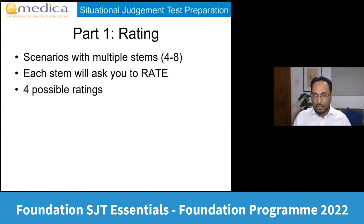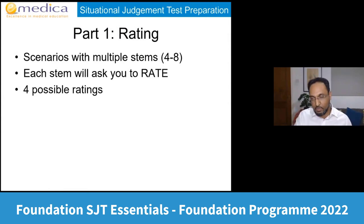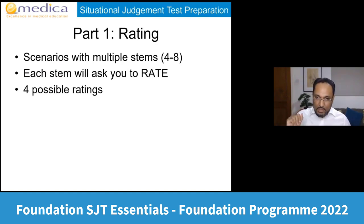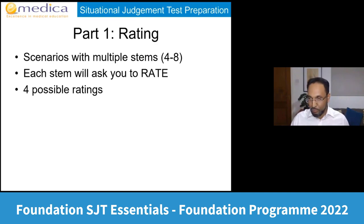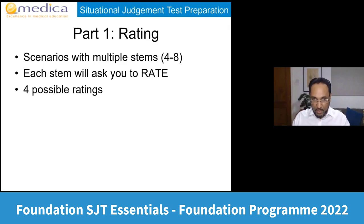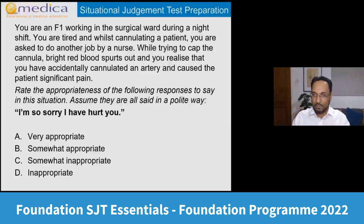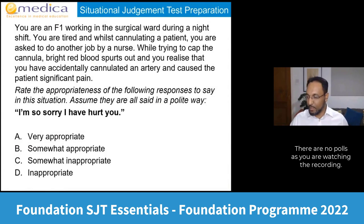In part one, you'll have a scenario with multiple stems — between four and eight per scenario. Each question is marked separately. Each stem asks you to rate things using four possible ratings, and there are three different types of ratings questions. I'll show you one type first and then tell you about the others.